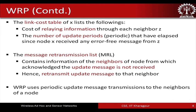The third table is the link cost table, which lists: the cost of relaying information through each neighbor Z, and the number of update periods that have elapsed since node X received any error-free message from Z. The last piece of information stored is the message retransmission list, which contains information about neighbors from which an acknowledged update message has not been received, so the update message is retransmitted to that neighbor.